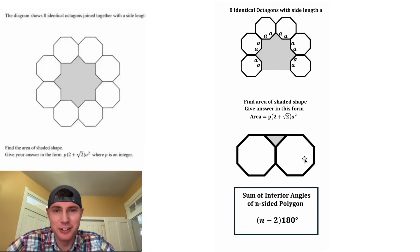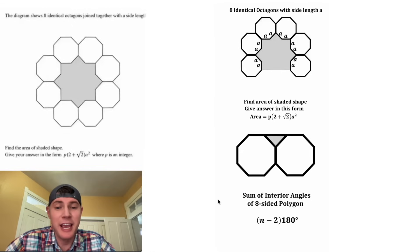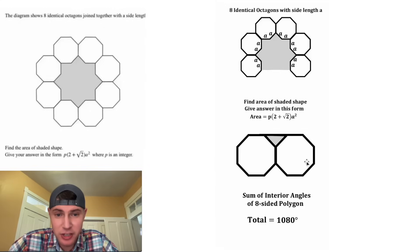Here's the notes for the interior angles of a polygon. The sum of the interior angles of an N-sided polygon is gonna be N minus 2 times 180. And we're dealing with an eight-sided polygon, so it's gonna be 8 minus 2 times 180. 8 minus 2 is equal to 6, and 6 times 180 is 1080. So the sum of all these interior angles is 1080 degrees.